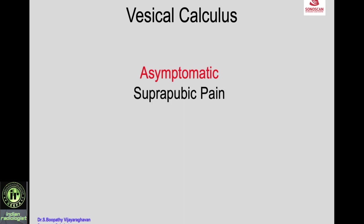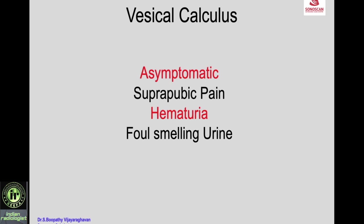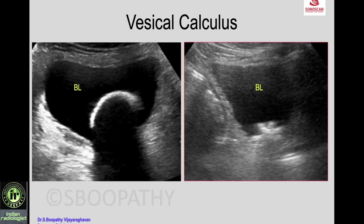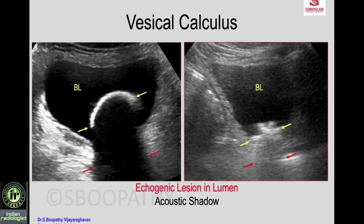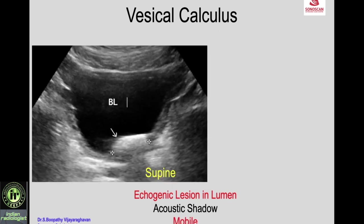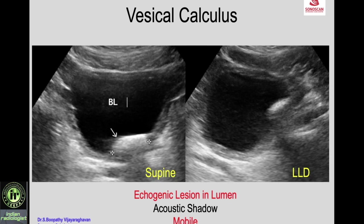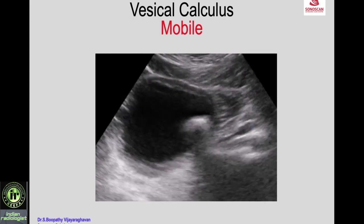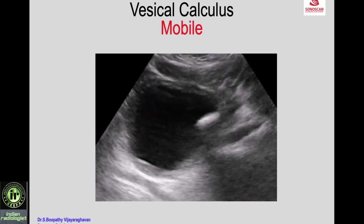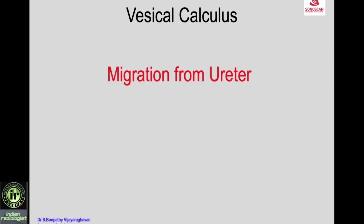Vesical calculus can be asymptomatic or may present with suprapubic pain, hematuria, foul-smelling urine due to infection with dysuria, or cause obstruction with acute retention. In vesical calculi, you see the urinary bladder fluid-filled with an echogenic lesion in the lumen — smooth, speculated, with classical acoustic shadow — confirming vesical calculus. Another feature of confirmation is mobility: the calculus lies near the base of the bladder in supine; put the patient in left lateral decubitus and the calculus shifts to the left lateral wall, confirming it is a mobile vesical calculus.